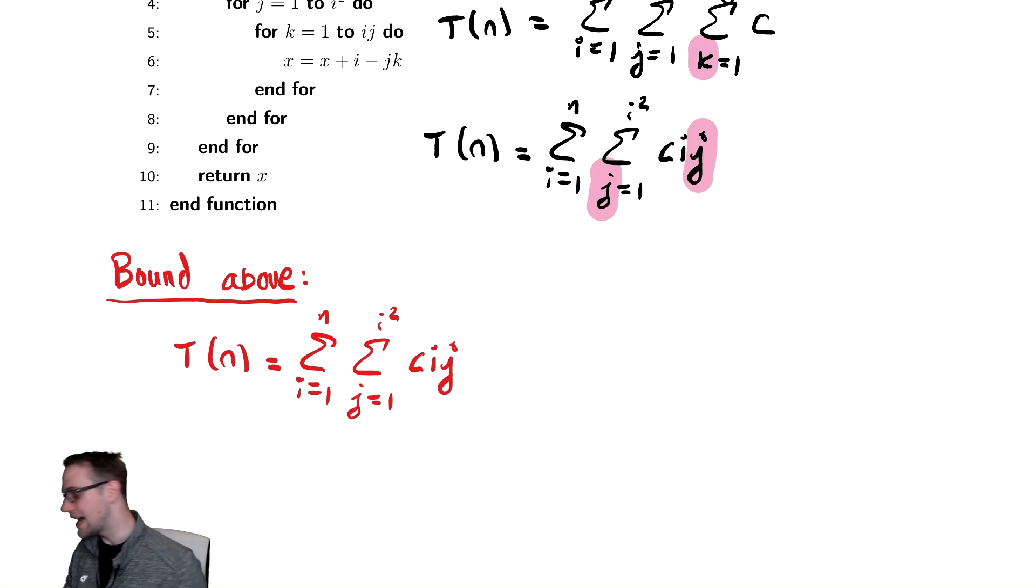So we can now bound this. The thing to keep track of just like when we were using formulas is what variable is the innermost variable. In this case, it is j. So to bound this above, we're going to do nothing to i, leave that going from 1 to n. And then j, we're going to leave the bounds of the sum untouched for now. We notice this is an increasing function of j. As j gets bigger, the sum and gets larger. Therefore, to bound it above, we replace j with the largest value that it obtains on that interval. The largest value j obtains on that interval is going to be i squared. So we replace j with i squared.